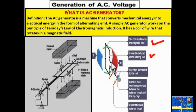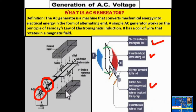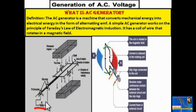You can see the direction of current induced in the rectangular coil. The slip rings connected to the coil allow us to take the AC supply outside. Brushes make continuous contact between the external circuit and the slip rings. There is a resistive load connected outside.